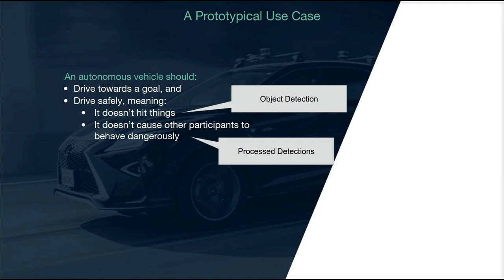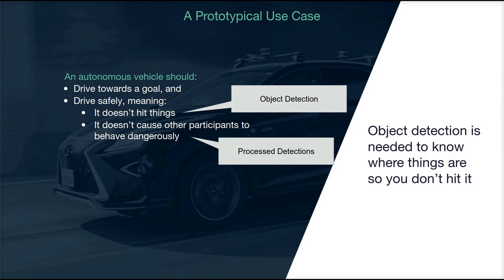The second aspect is also related to object detection. In order to not cut off somebody, you need to know how somebody is moving. In order to know how somebody is moving, you need to be able to detect an object over time. This is also under the purview of object detection, albeit in a processed manner. So in short, object detection is needed for the core fundamental use case of an autonomous vehicle so that you know where things are so you don't hit them.